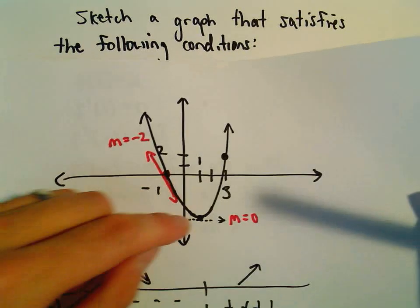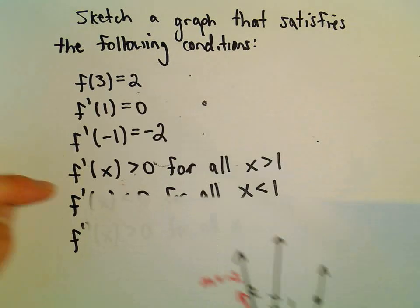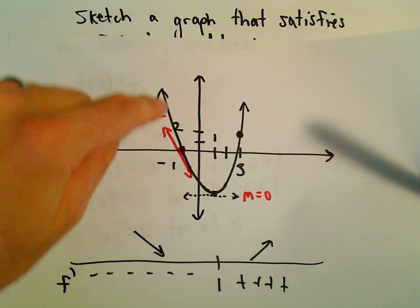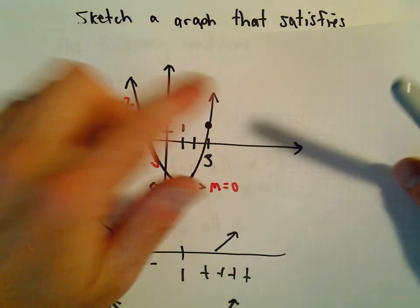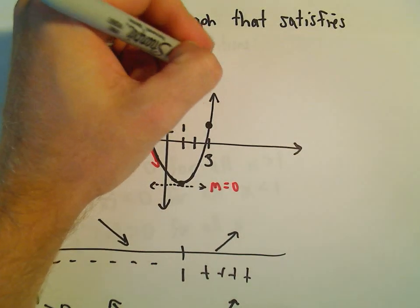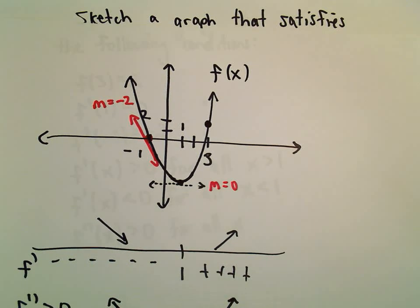We've got it increasing for all x-coordinates greater than 1, and we've got it decreasing for all x-coordinates less than 1. Last but not least, it's concave up everywhere. So this function f of x satisfies all of those conditions.